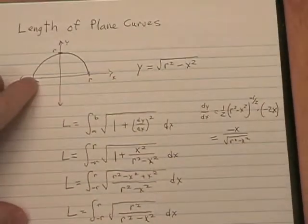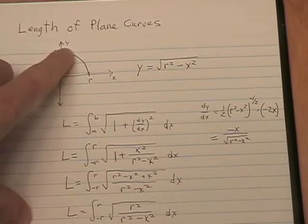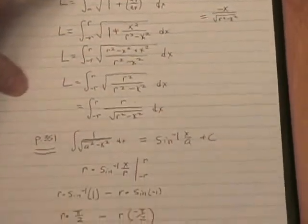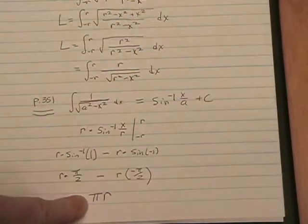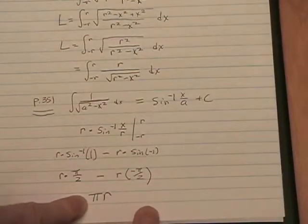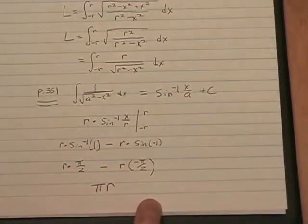Remember that we were trying to find the length of this semicircle, which we've just shown, using calculus, to be pi r. And it only makes sense that the entire circle would be 2 pi r, and thus you can see where the formula for the circumference of a circle came from.